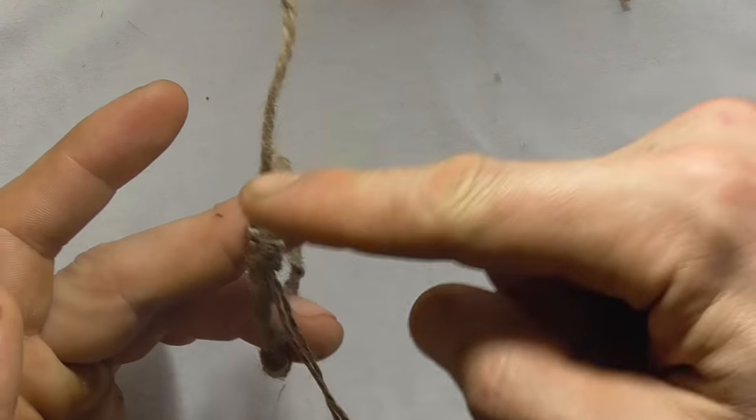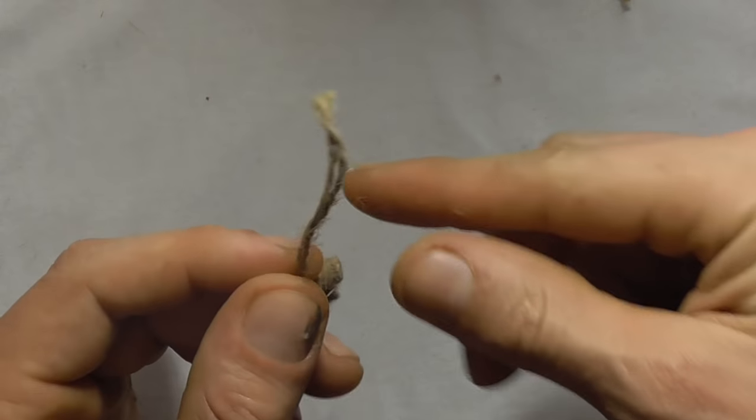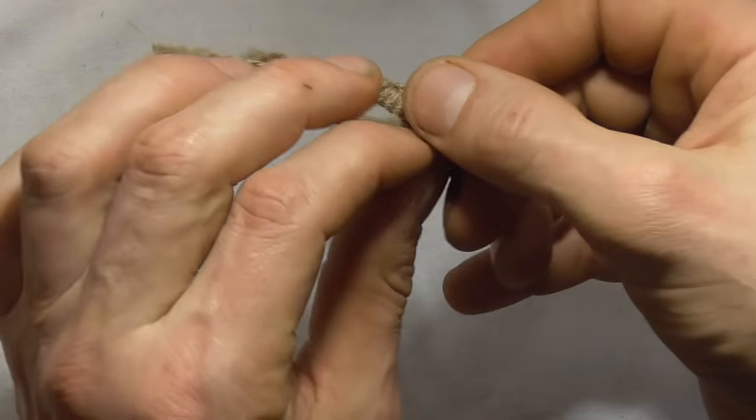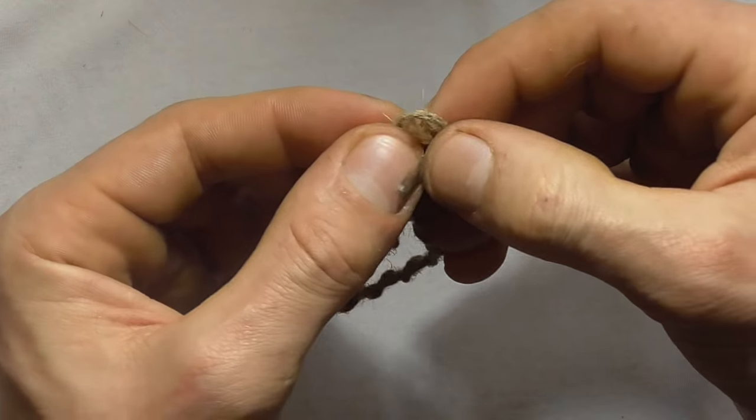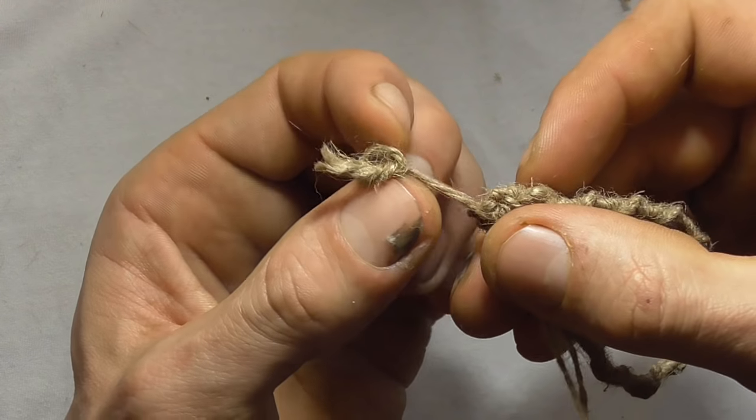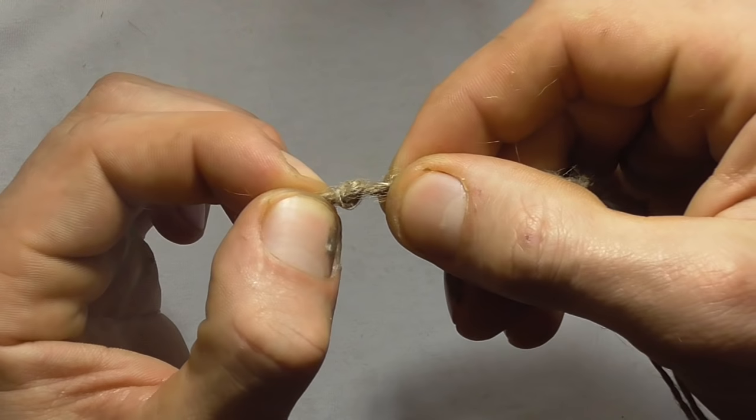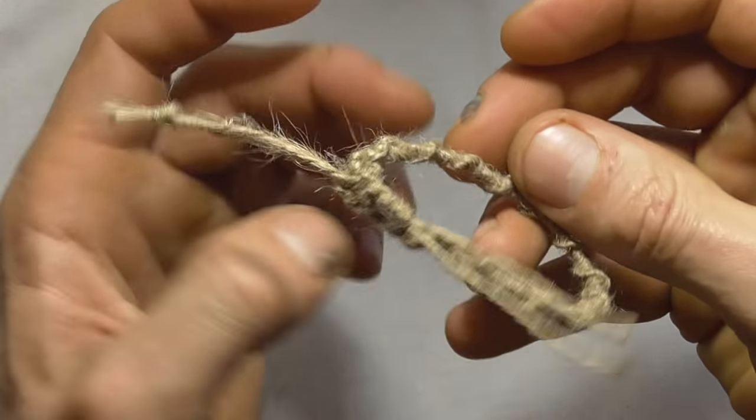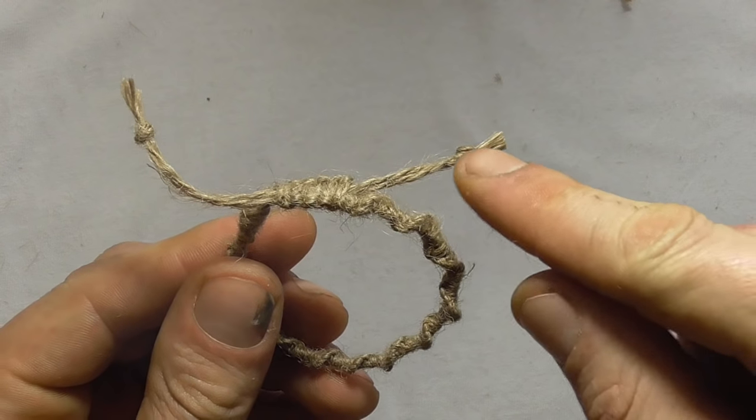Then we'll do the exact same thing on this side so the bracelet doesn't slide all the way apart. We're going to do that by forming overhand knots on the ends here. Form a loop and then tuck those ends through the loop, work the knot right close to the end there, pull that tight, and do the same on the other side.